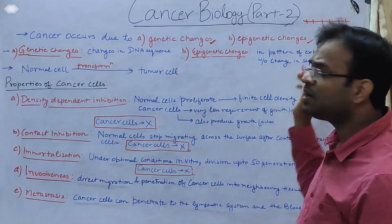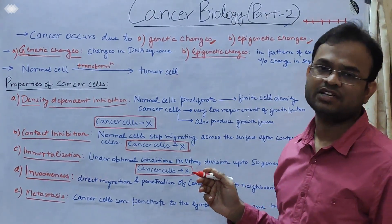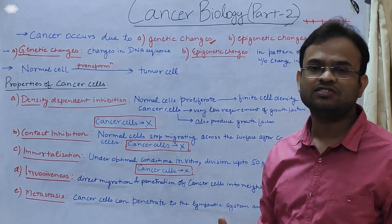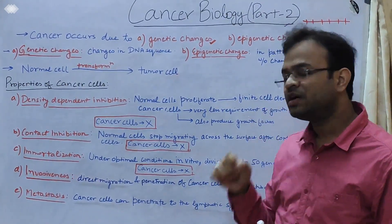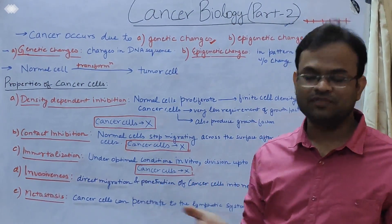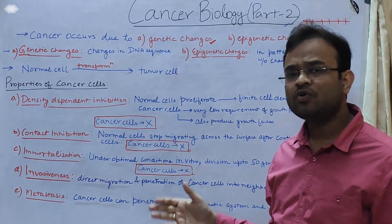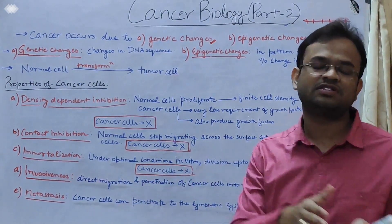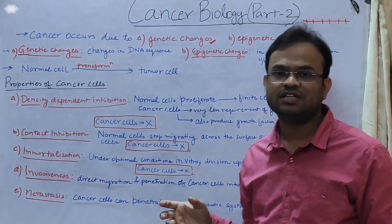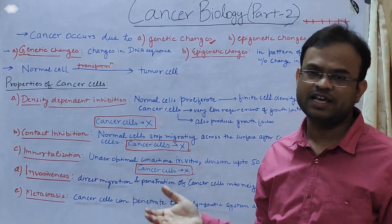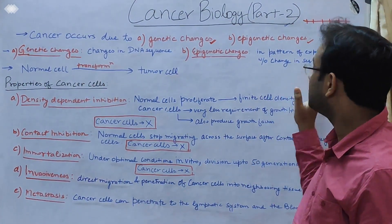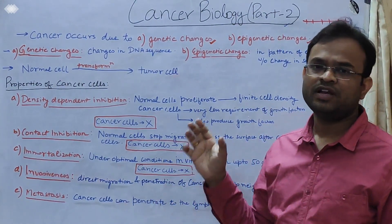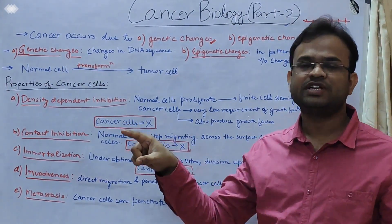Now let's discuss epigenetic changes. In epigenetics, we can change the phenotype without changing the genotype. All cells have the same sequence of DNA, yet one cell functions as a liver cell and another as a muscle cell. This is because of epigenetic changes — gene silencing or gene activation — which take place through mechanisms like DNA methylation or DNA acetylation. In the case of methylation, a methyl group is attached to the cytosine present in the DNA.